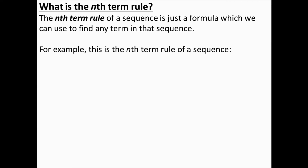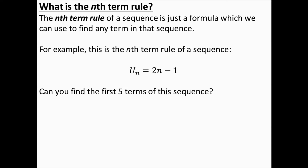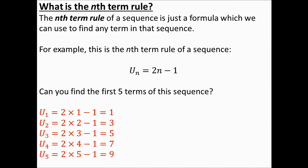Let's have a look at an example. Here is the nth term rule of a sequence. Can you find the first five terms of this sequence? To find the first five terms all we need to do is substitute our values of n into the formula. For n equals one, u₁ equals two times one minus one, which gives us one — so the first term is one. Pause and work out the other four terms. The answers are: u₂ is three, u₃ is five, then seven, and the fifth term is nine. This is just the sequence of odd numbers.